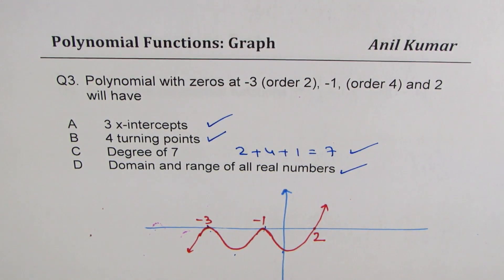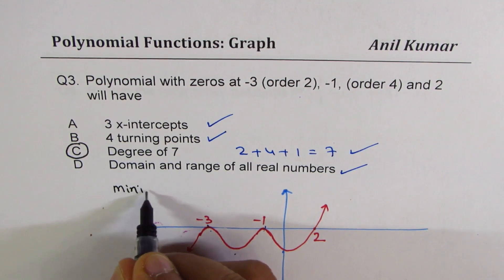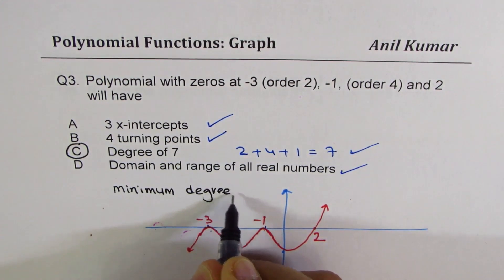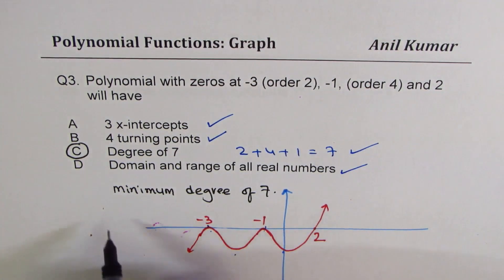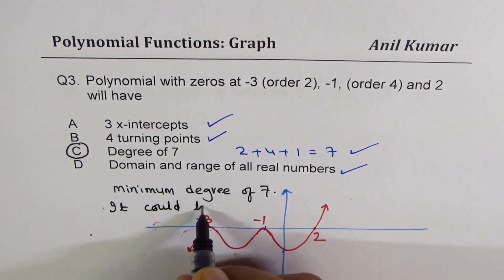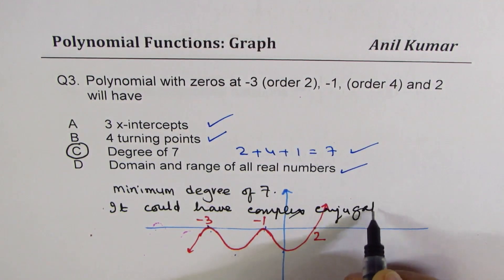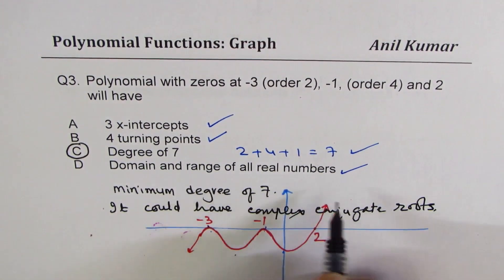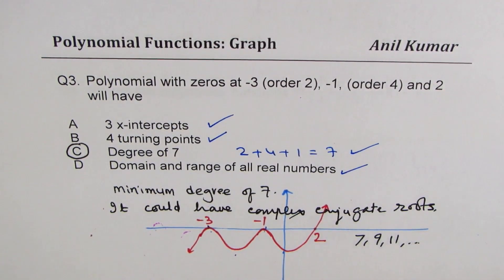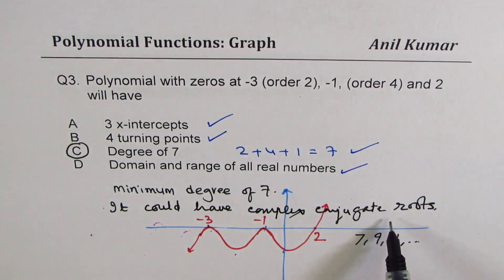The option which is wrong is C. The actual statement should be minimum degree of 7. The degree could be 7, 9, 11, and so on, depending on other roots. We could have complex conjugate roots — imaginary zeros. That is why C is wrong. So this is an extremely important question.